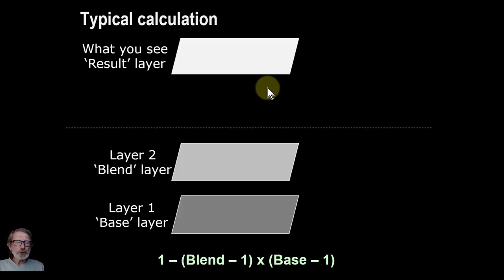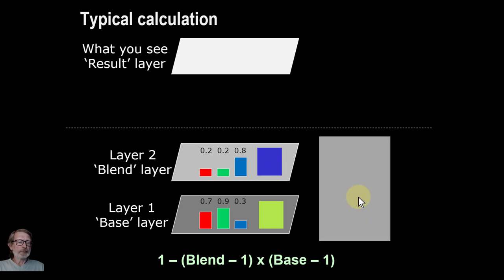So let's watch a calculation happen. So you start off 0.7, 0.9, 0.3, and you get this kind of nice color here. So green is the dominant color, so it's greenish. And then the blend layer, 0.2, 0.2 and 0.8, so this has got a stronger blue. Now then, take those three, and we want the invert, so we get what's left at the top here. So we get 0.3, 0.1, 0.7.